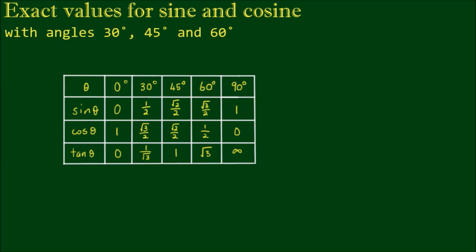At some point in your studies of trigonometry, you'll learn that the sine and cosine of the angles of 30, 45, and 60 degrees have special values, and you may be expected to remember these values, which may have led you to try and remember this table for an exam. Well, the problem, in my opinion, is that on its own, this table is not very interesting, and there is quite a lot to remember.